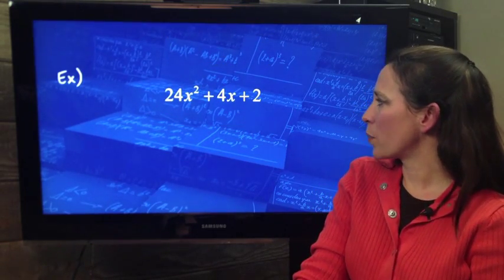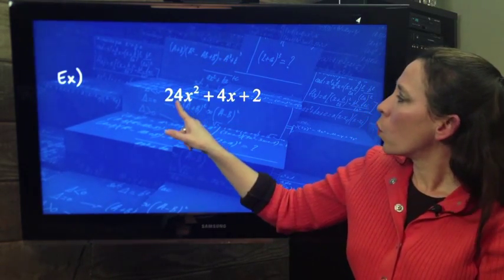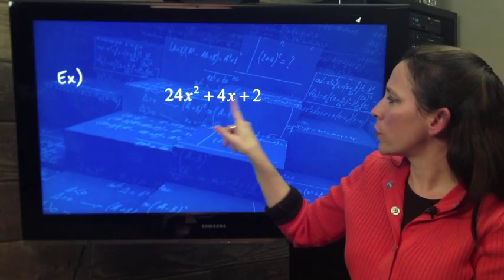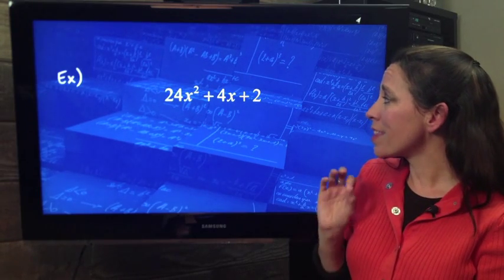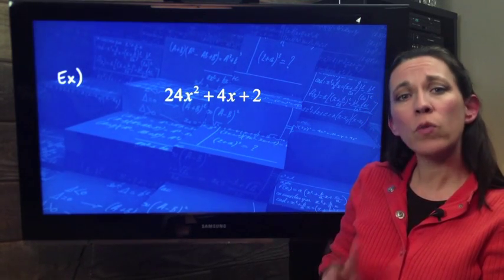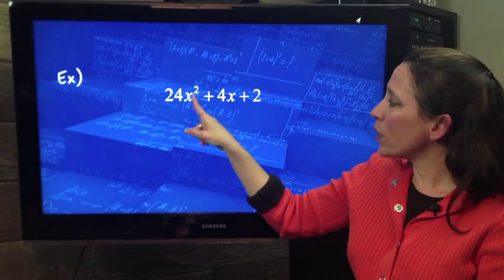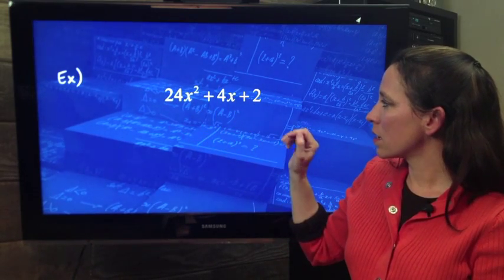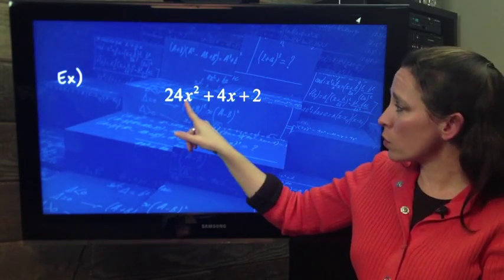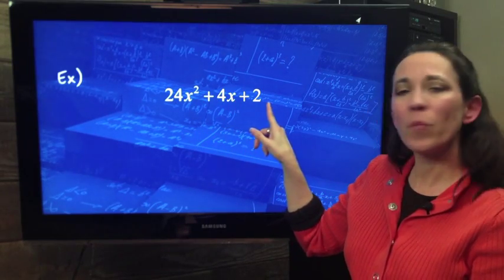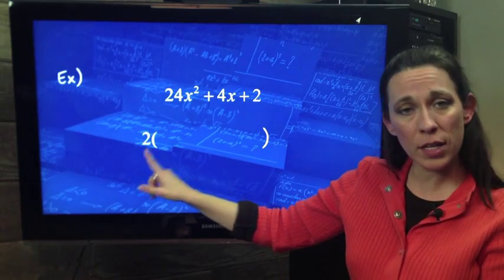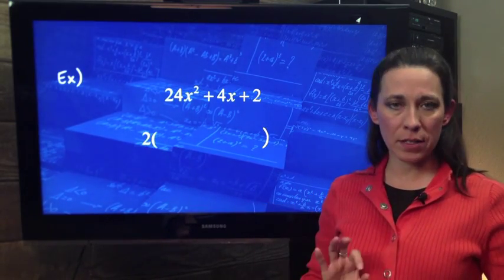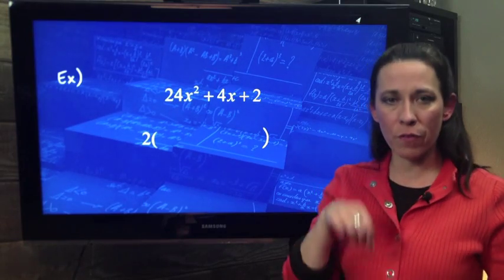Now here's kind of a special example. We have a 24, a 4, and a 2 as far as the numerical coefficients here. And the largest number that divides in evenly in all of those is 2. But we don't have an X here in the last one. We have 2 in the first one, 1 in the second one, but we don't have an X in the third one. Therefore, our GCF is just the number 2. They do not all have an X in common.